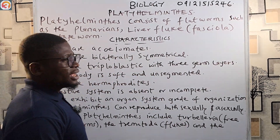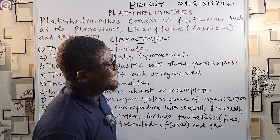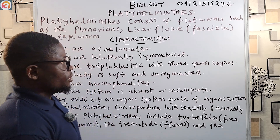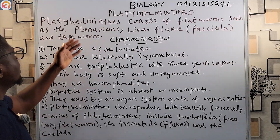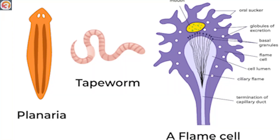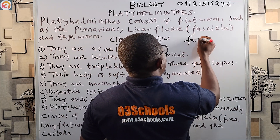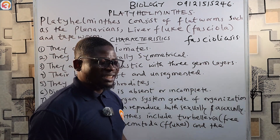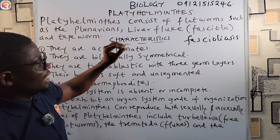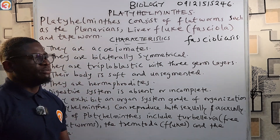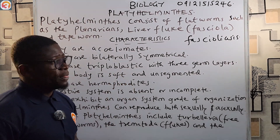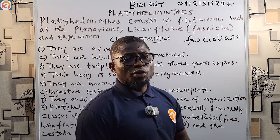Now let's go to the phylum Platyhelminthes. Platyhelminthes are called flatworms and there are over 13,000 species in existence. Platyhelminthes consists of flatworms such as the planarians, the liver fluke which is called Fasciola — which causes the well-known infectious disease fasciolasis — and of course the tapeworm. Those are the main examples of Platyhelminthes.